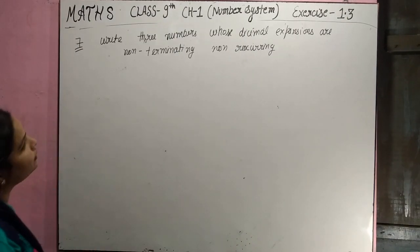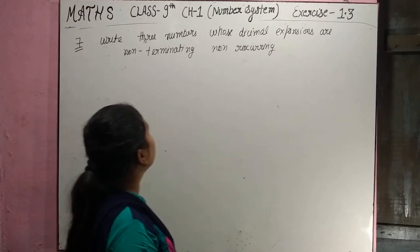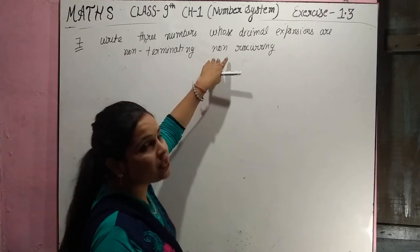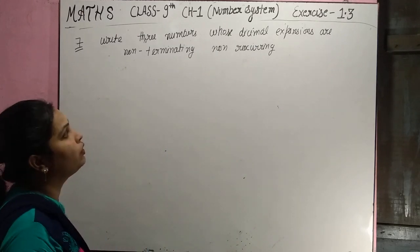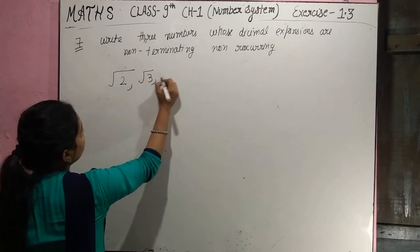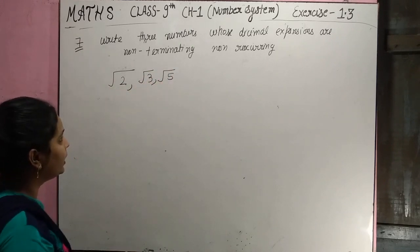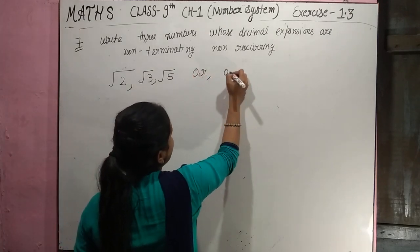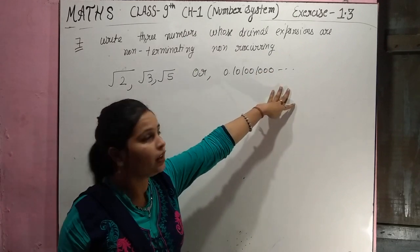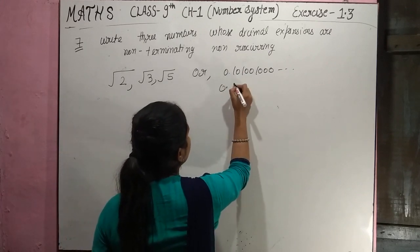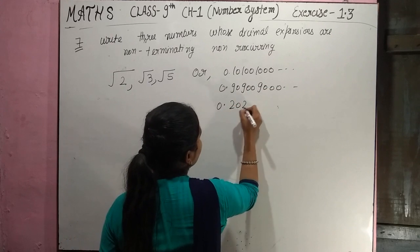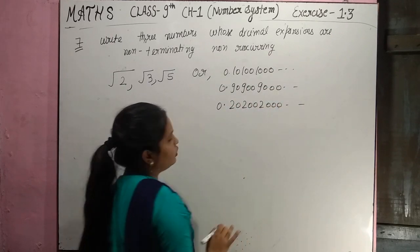Question number 7: write 3 numbers whose decimal expansions are non-terminating and non-recurring. Such numbers are irrational. We can use non-perfect square roots like √2, √3, √5. Alternatively, we can write: 0.10100100... (with an increasing number of zeros each time, so non-repeating), 0.90900900..., and 0.20200200... These are non-terminating and non-repeating.